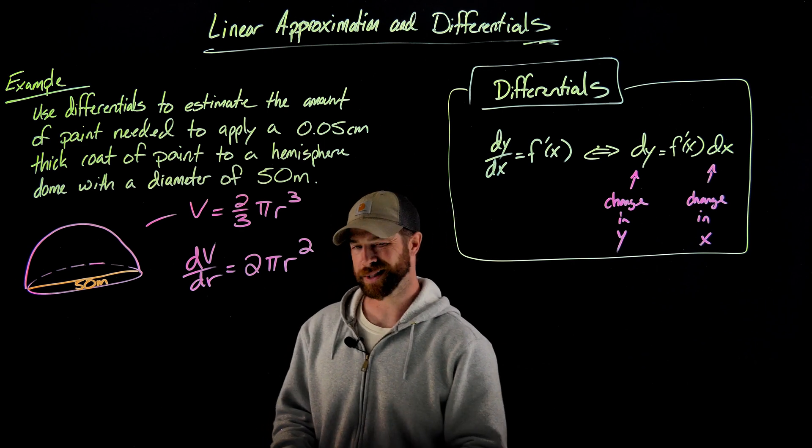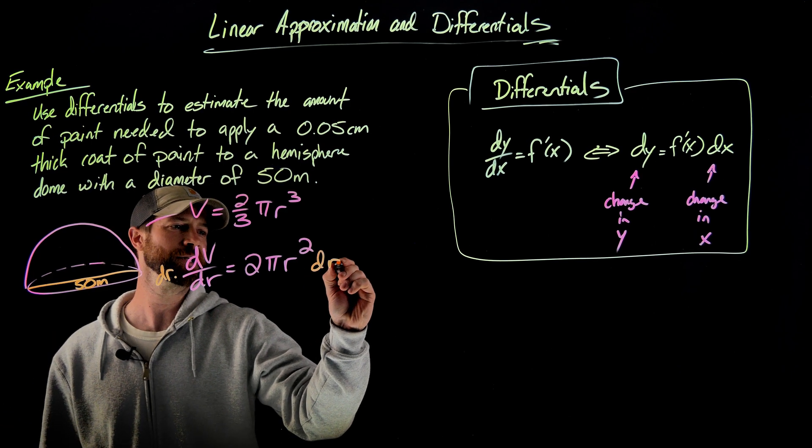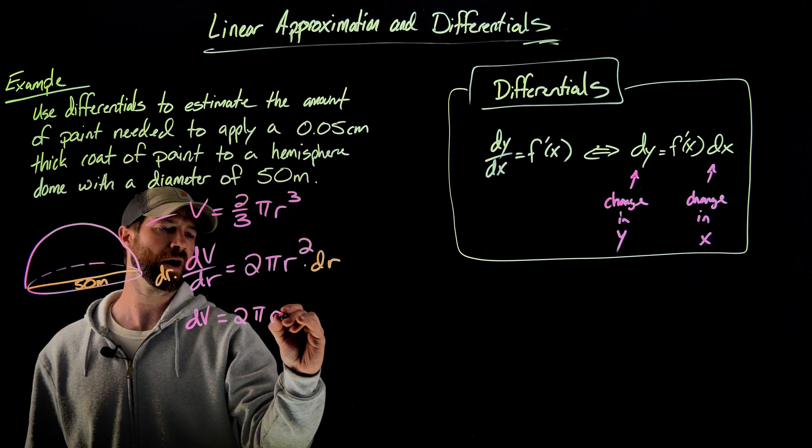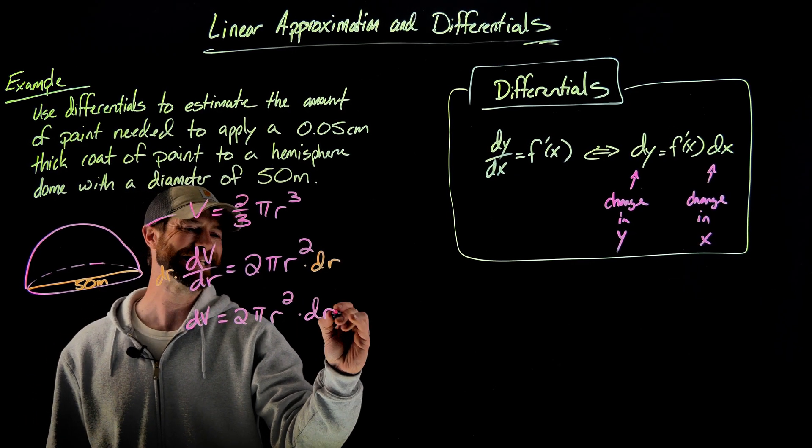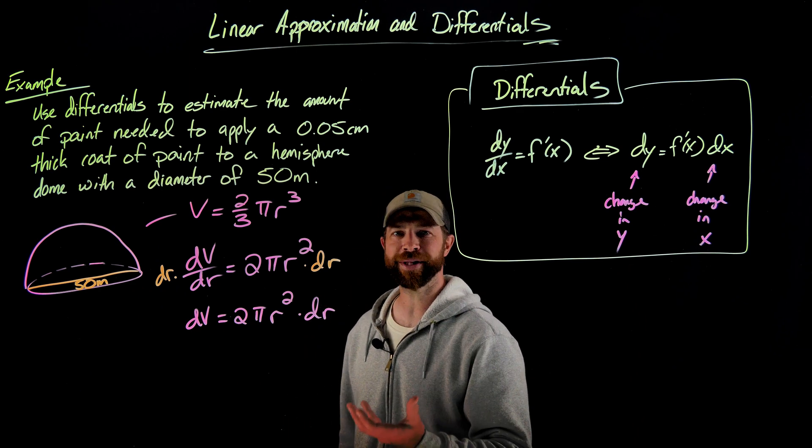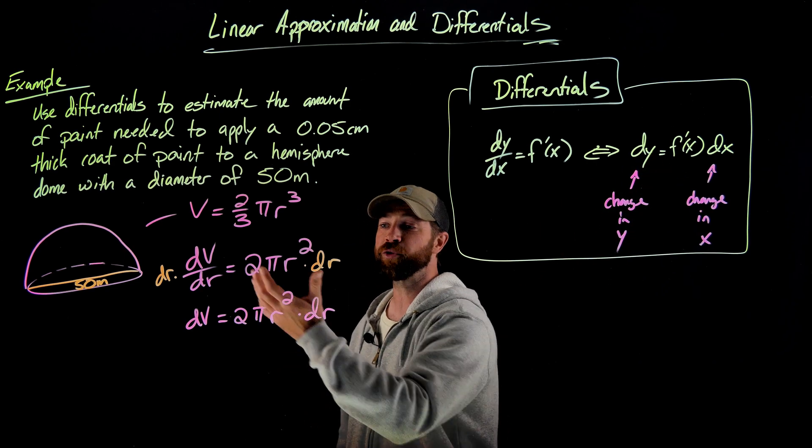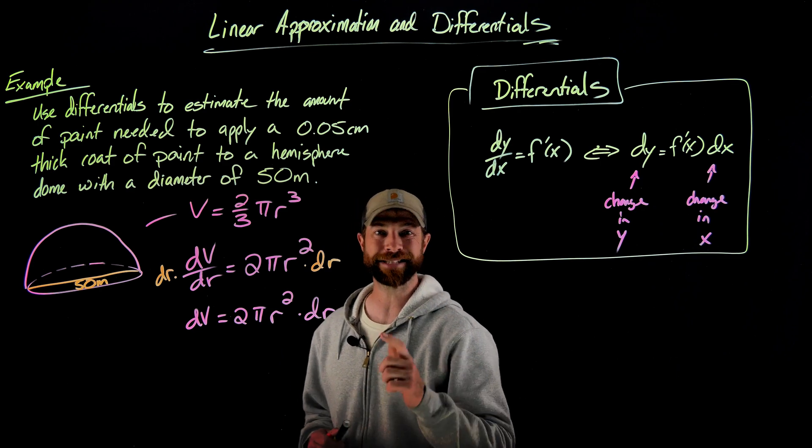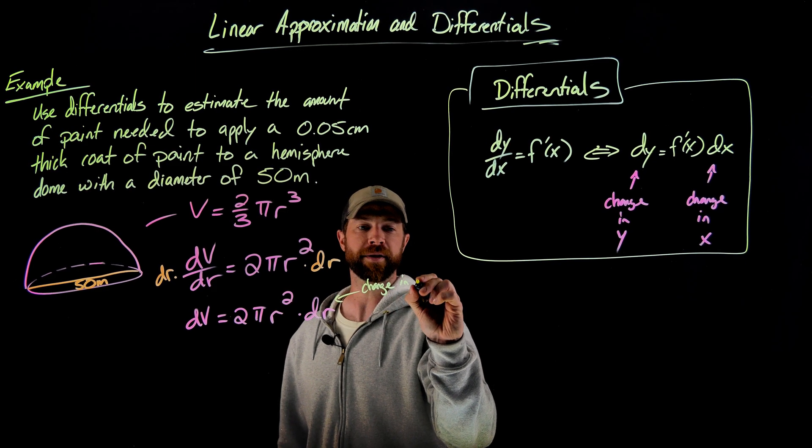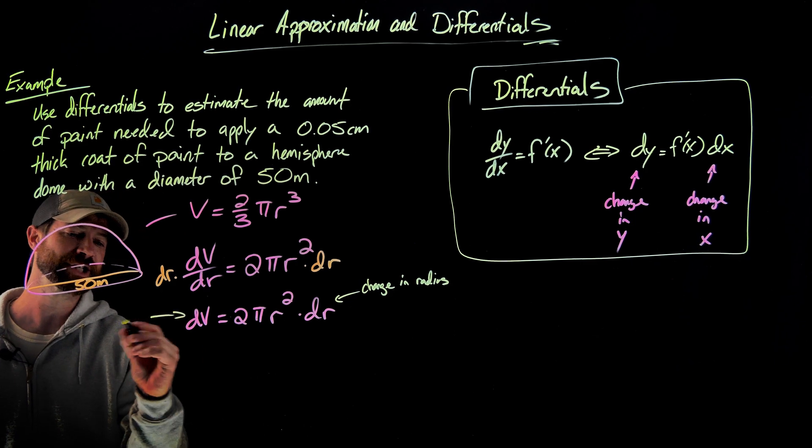Then what I'm going to do is I'm going to multiply both sides of this equation by this dr, which is the change in radius. And this gives me that dV equals two pi r squared times dr. Okay, so I haven't really explained why I'm doing all this, but I want to show you this. I think this would really help you understand what this means right here. But in this case, I've rewritten this derivative in the terms of differential. Specifically, this dr right here is a change in the radius. This dV right here is the change in volume.